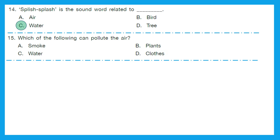Question 15: Which of the following can pollute the air? Is it smoke, plants, water or clothes? The right answer is option A — smoke. Smoke can pollute the air because it goes up into the air and brings a lot of toxic gases.